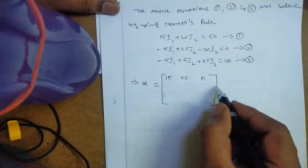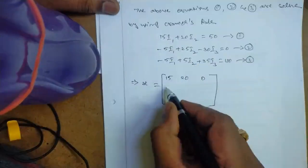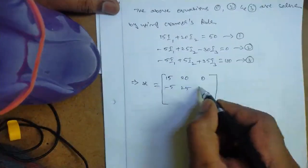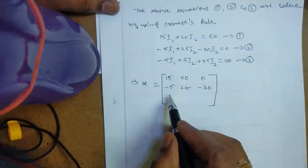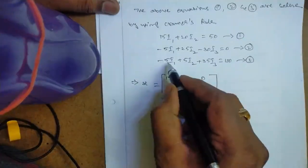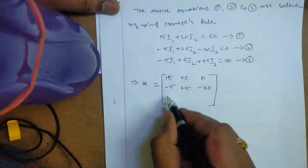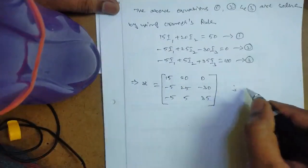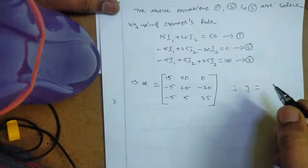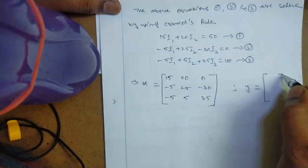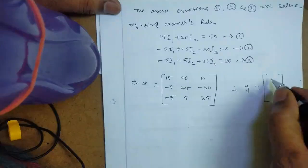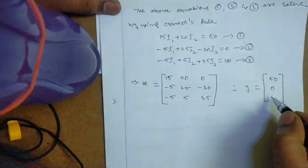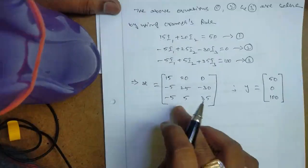Next, the second row comes from the second equation: minus 5 for i1, 25 for i2, and minus 30 for i3. Next, the third row: i1 coefficient is minus 5, i2 coefficient is 5, and i3 coefficient is 35. Next, matrix Y — this is the constant matrix. The constants are 50 in the first equation, 0 in the second equation, and 100 in the third equation.